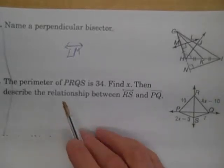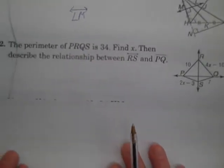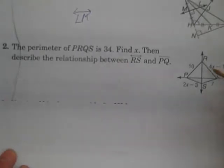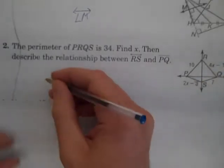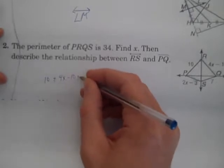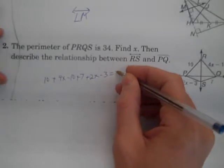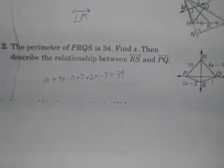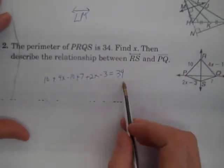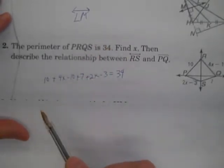Number 2, the perimeter of, where we can see it, the perimeter of PRQS, those four sides, the perimeter is 34. That's 10 plus 4X minus 10 plus 7 plus 2X minus 3. That is equal to 34. Find X. Well, this will help us find X. Taking the perimeter, adding 4 sides and setting it equal to that perimeter of 34.